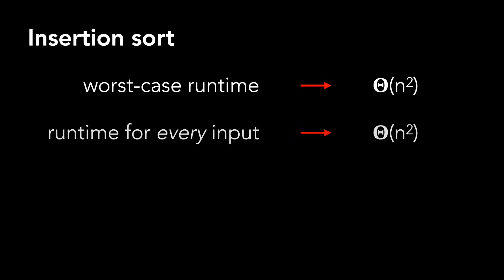Let's bring back insertion sort to demonstrate. For example, it's perfectly legitimate to say the worst case runtime of insertion sort is Θ(n²). However, you can't say that the runtime for every input is Θ(n²) because theta has upper and lower bounds.